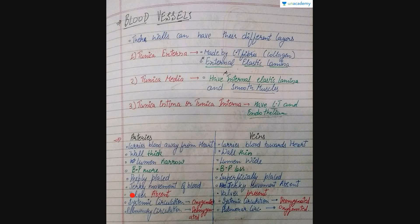Valves are absent in arteries as there is no need for them, while in veins valves are present to prevent the backflow of blood. In systemic circulation, arteries carry oxygenated blood while veins carry deoxygenated blood. In pulmonary circulation, arteries carry deoxygenated blood while veins carry oxygenated blood.